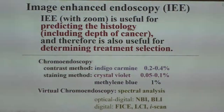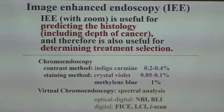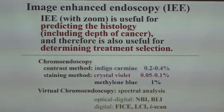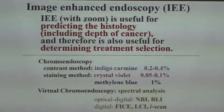Talking about diagnosis, image-enhanced endoscopy (IEE) is very useful for predicting histology, and therefore it is also useful for determining treatment selection. Image-enhanced endoscopy includes dye methods — indigo carmine or crystal violet — or non-dye methods, virtual chromoendoscopy, which includes NBI, BLI, LCI, or iScan, and others.